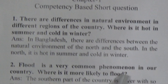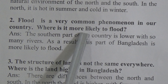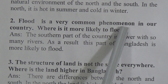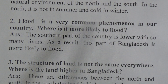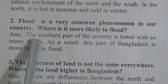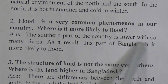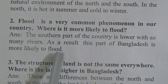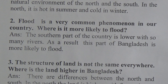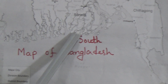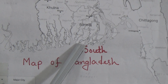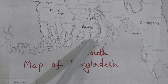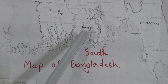Question number 2: flood is a very common phenomenon — meaning feature — in our country. Where is it more likely to flood? The answer is: the southern part of the country is lower with so many rivers. As a result, this part of Bangladesh is more likely to flood. Student, follow this part on the map — it is the south part of Bangladesh, it is the lower part with many rivers, so this part is more likely to flood.